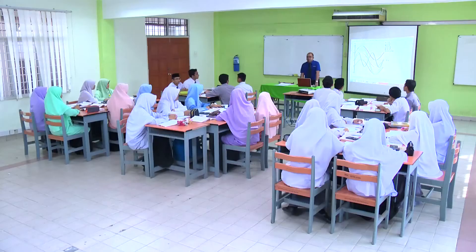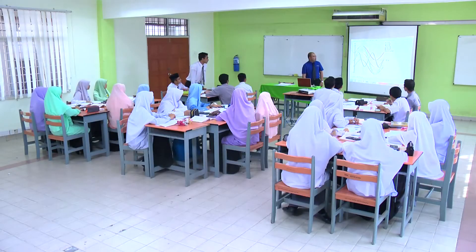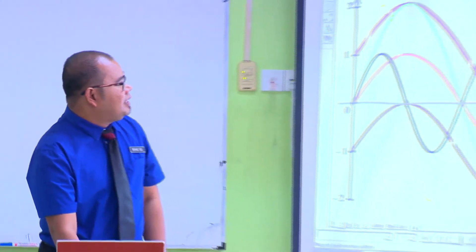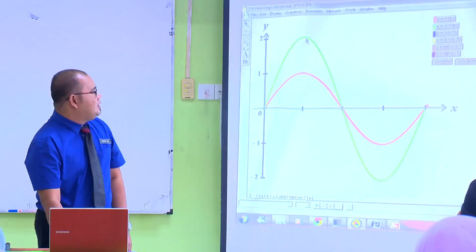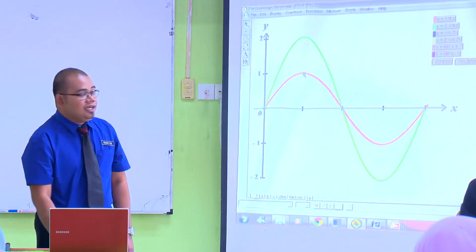Mengapakah graf-graf itu berbeza antara satu sama lain? Perkali di hadapan sinus menentukan ketinggian graf, cikgu. Perkali di hadapan sinus menentukan ketinggian graf. Kita bandingkan di antara yang pertama dengan yang ke-2. Kalau 2, tinggi dia adalah 2. Kalau 1, tinggi dia adalah 1.